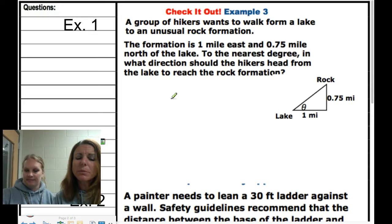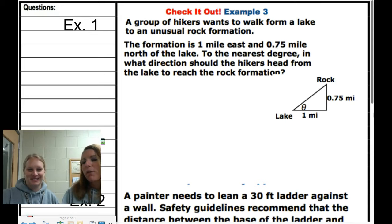Example 1: A group of hikers wants to walk from a lake to an unusual rock formation. The formation is 1 mile east and 0.75 miles north of the lake. To the nearest degree, in what direction should the hikers head from the lake to reach the rock formation? We are trying to find theta.